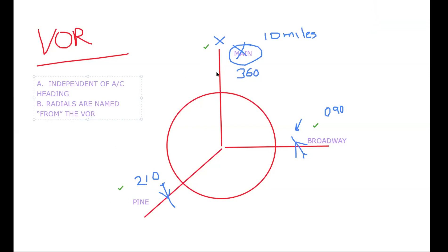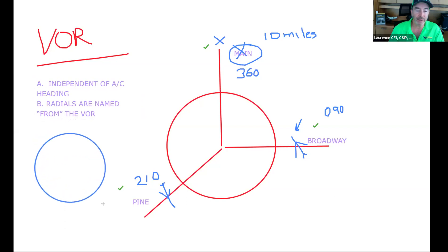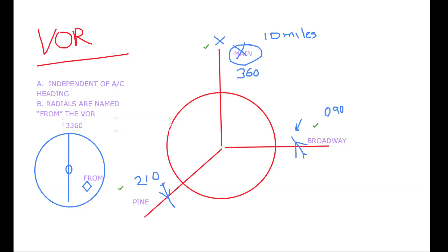So when we look at our VOR, or excuse me, our OBS indicator, we're going to draw this guy up here, the one on the 360 radial. And so we're going to center the needle. And we are going to get a FROM flag. We are from, and then we would put up here, the 360, 360 radial. So this representation is this aircraft right here.